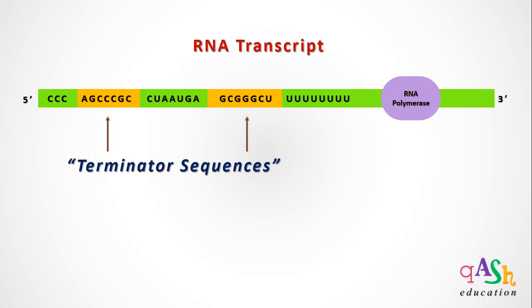Genes whose transcription cannot be terminated with the assistance of rho protein require the presence of special terminator sequences. These terminator sequences are inverted repeats of each other and therefore show complementary base pairing. Once RNA polymerase has completed the transcription of these terminator sequences,